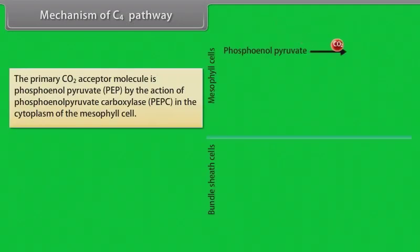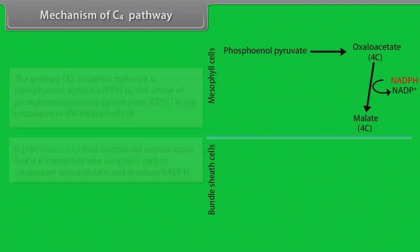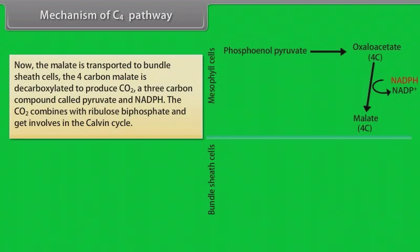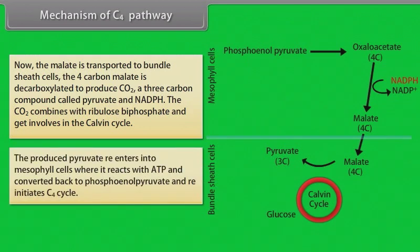In the C4 pathway, the primary CO2 acceptor molecule is phosphoenolpyruvate (PEP), acted upon by PEP carboxylase in the cytoplasm of mesophyll cells, producing a 4-carbon compound oxaloacetate. This is converted to another 4-carbon compound called malate, producing NADPH. The malate is transported to bundle sheath cells, where the 4-carbon malate is decarboxylated to produce CO2, a 3-carbon compound called pyruvate, and NADPH. The CO2 combines with RuBP and enters the Calvin cycle. The produced pyruvate re-enters mesophyll cells where it reacts with ATP and is converted back to PEP, re-initiating the C4 cycle.